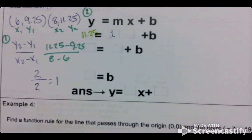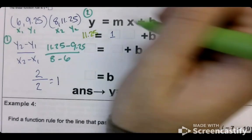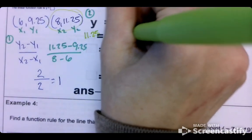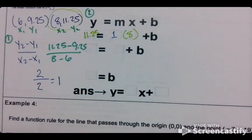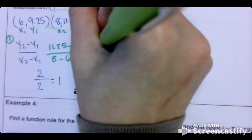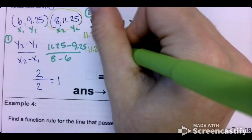What are we going to plug in for X? So it's not going to be 6 because we used 11.25, so it's got to be the 8. Alright, and then what will go here? 11.25. What will go here? 8.